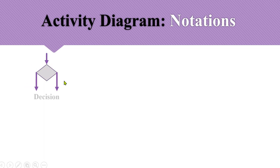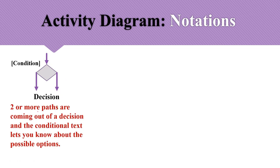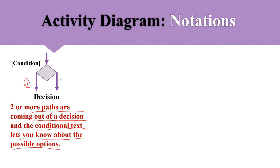Next is the decision node, similar to flowcharts: it has one incoming flow and multiple outgoing flows depending on a condition. Along with the decision diamond, you must mention the condition — true/false, yes/no, or any parameter. It splits the flow into two or more paths, and the conditional text tells you which option to follow, allowing you to continue with any of the outgoing flows based on the condition's value.